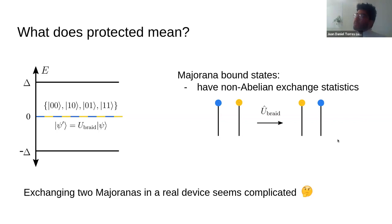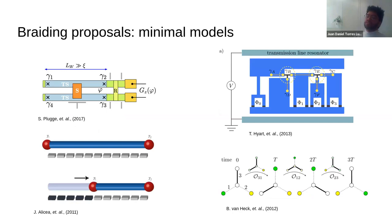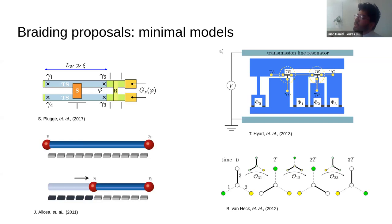Even though braiding looks simple in principle, Majorana devices are usually quite complicated and involve many moving parts. Therefore, exchanging two particles does not seem like a trivial question. There are multiple existing proposals about braiding — some rely on charging energy, some are purely electrostatic, and some combine both aspects. However, what all these proposals have in common is that they are typically minimal models that just consider the minimal ingredients necessary to show the proposal works, which does not tell much about what will happen in a real case.